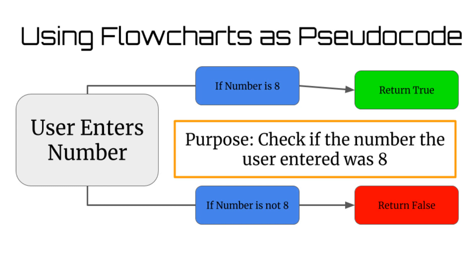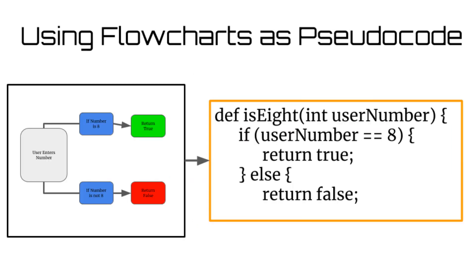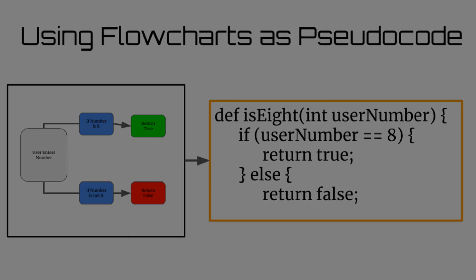Flowcharts also help you look for any errors that you may have missed when thinking about the function. Additionally, it abstracts the programming statements up to simple blocks, making it easier to modify and change. The best part is that when you have finished testing cases, you can simply convert the blocks into statements and you have a well-written function without any debugging needed.